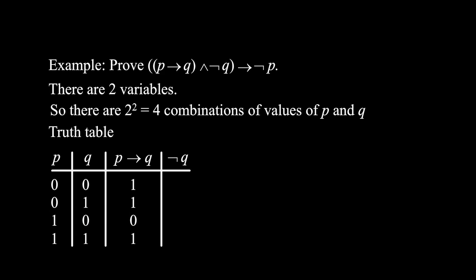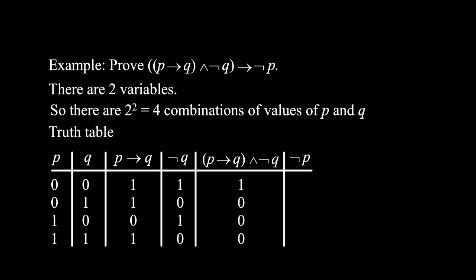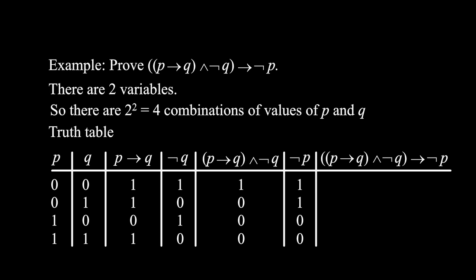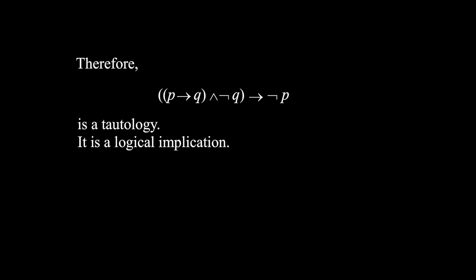In the fourth column, we put not q — this is just the opposite of q. In the fifth column, we evaluate (p implies q) and not q — this is the AND of the third and fourth columns. In the sixth column, we put not p, the opposite of p. In the last column, we put the main implication: the fifth column implies the sixth column. We look for rows where the fifth column is 1 and the sixth column is 0, but there is no such row. All values are ones, so this implication is a tautology — it is a logical implication.